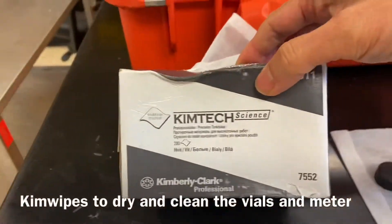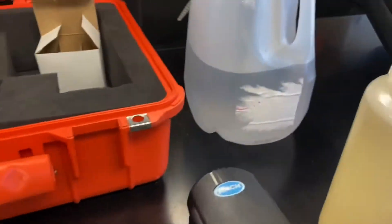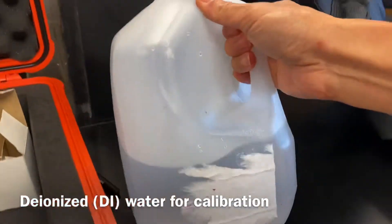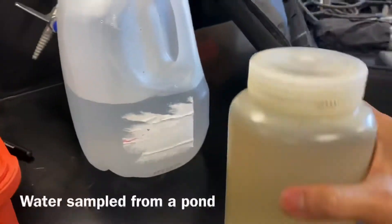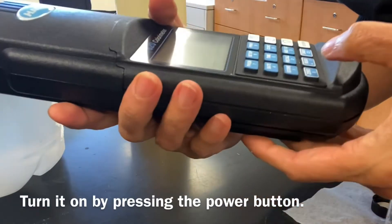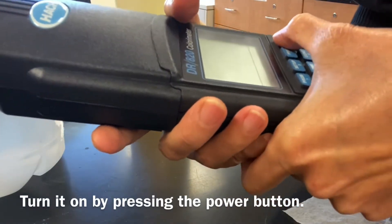Turbidity is measured by shining light through a water sample and recording the light scattered by the sample. The more suspended matter there is, the more the light is scattered, and therefore the higher the turbidity reading will be.